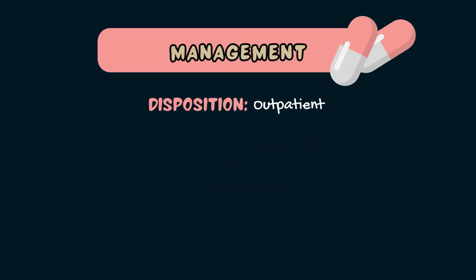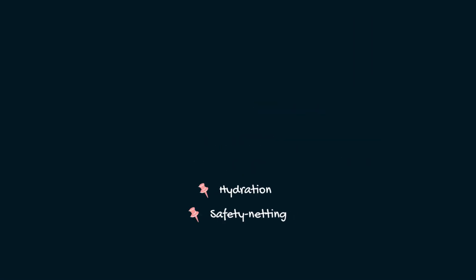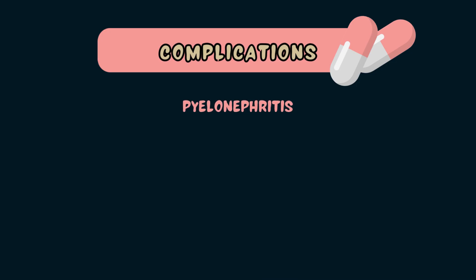First-line treatment includes a short course of oral antibiotics, which can vary according to local guidelines. The choice of antibiotic will depend on local resistance patterns and availability. Common antibiotics used to treat urinary tract infections include trimethoprim, nitrofurantoin, and cefalexin. Symptom relief with analgesic medication such as paracetamol can also help. It is important patients stay hydrated and return if symptoms do not improve within a few days. If a UTI is left untreated, it can lead to complications such as pyelonephritis, or bacteria can gain access to the bloodstream, leading to urosepsis. Patients with recurrent UTIs should be thoroughly evaluated for risk factors and given consideration for prophylactic antibiotic options.